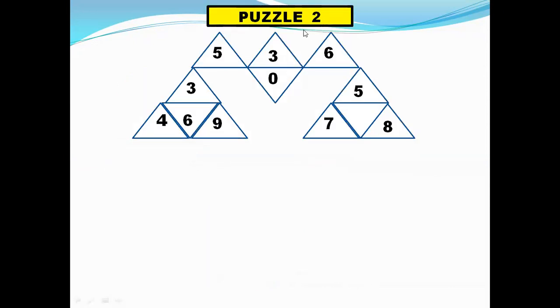Moving to puzzle 2. We have so many triangles here. 5, 3, 6, 0 are the numbers. 3, 4, 6, 9, then 5, 7, 8 and we have to replace this question mark.